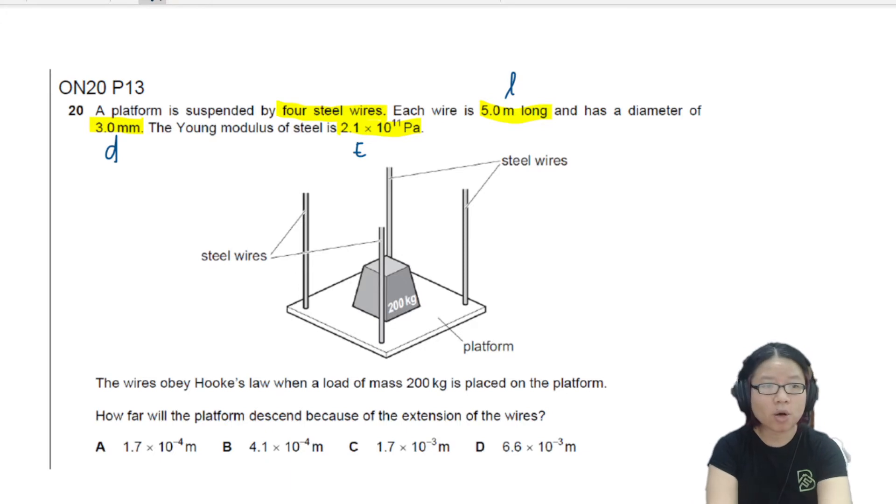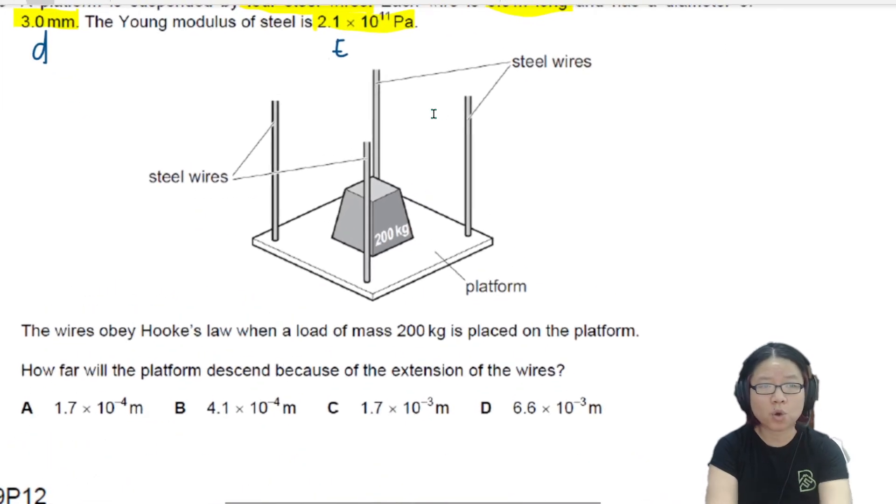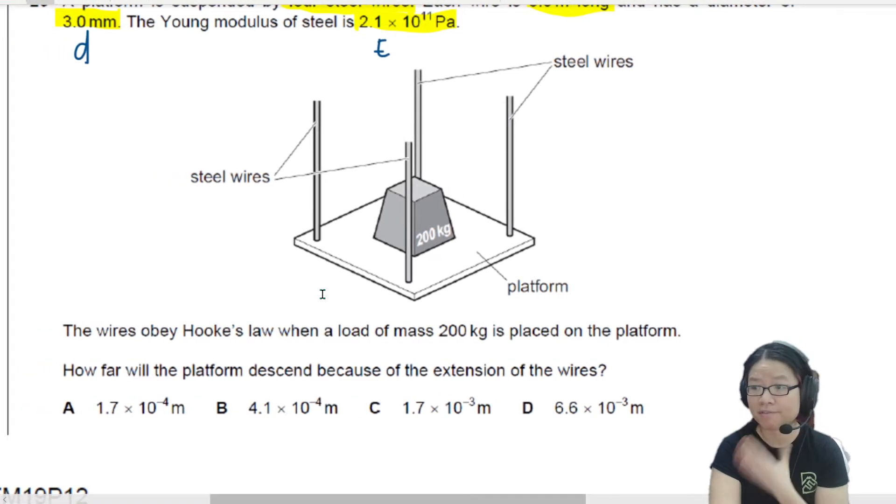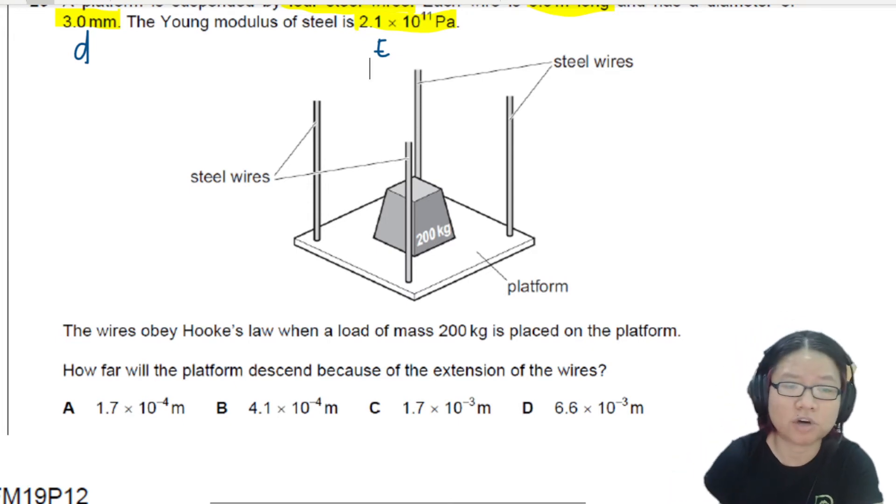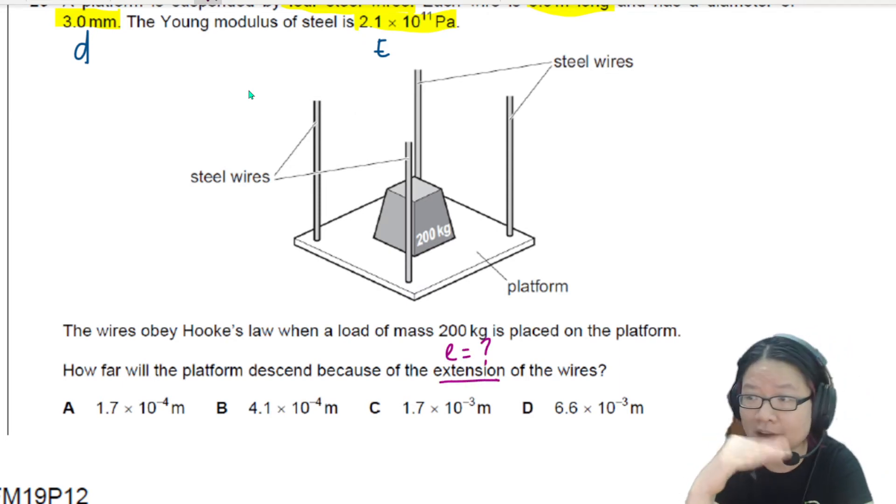The wire obeys Hooke's law when a load of mass 200 kg is placed on the platform. How far will the platform descend because of the extension of the wire? Indirectly, they are asking for extension. What is E? How much would the platform move downwards?